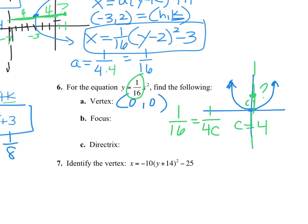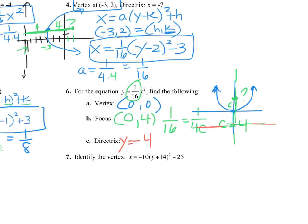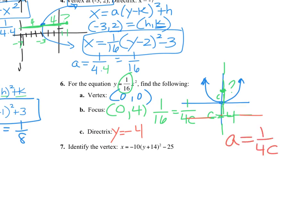Where did c equal 4 come from? You take a, which is 1/16, and set it equal to 1 over 4c, then cross-multiply or just observe that c must be 4. Important: if you write the focus as just '4' I'll mark it wrong — the focus is a point with coordinates. And if you write the directrix as just 'negative 4' I'll mark that wrong too — the directrix is a line: y equals negative 4.